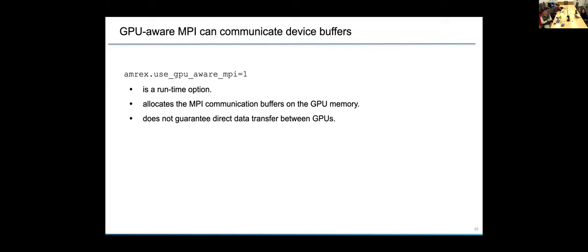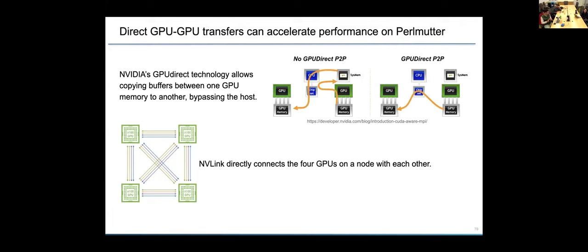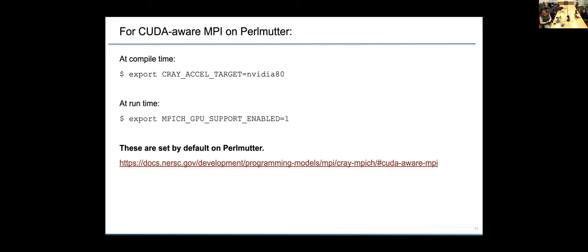So if you use this option, use GPU-aware MPI for your AMREX application, it's a runtime option. It will allocate the MPI communication buffers on the device memory, on the GPU memory. So that in the MPI calls, the device buffer gets passed directly into the MPI calls. But that does not guarantee direct data transfer between GPUs. Actually, the data being copied from one GPU to another directly may have more requirements in terms of the hardware or the firmware of the system that you are running on. So I wanted to clarify some of those things here for Perlmutter users, but there might be takeaways for others too.